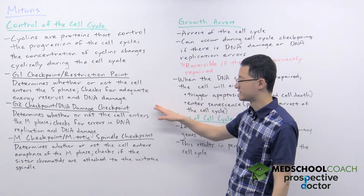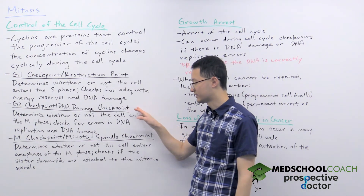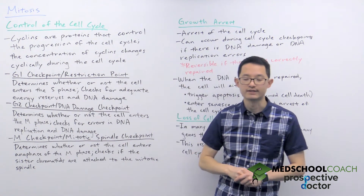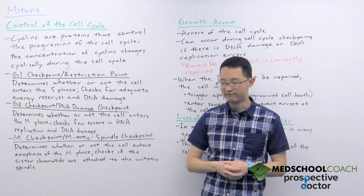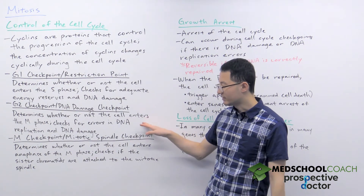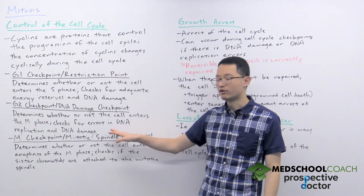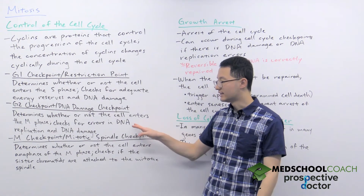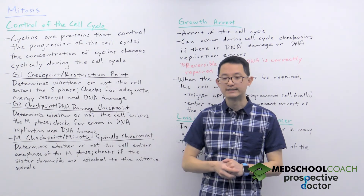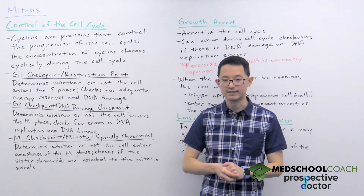The second checkpoint is the G2 checkpoint, also called the DNA damage checkpoint. This determines whether or not the cell is going to proceed from the G2 phase into the M phase. This checkpoint is looking for errors in DNA replication and also looking for DNA damage. That makes sense because the G2 phase occurs after DNA synthesis, so the cell is checking to make sure that the DNA has been properly replicated.